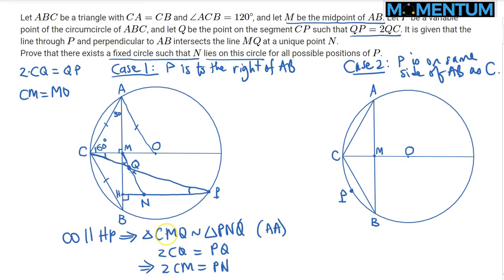But wait, 2CM is the same thing as CO. Therefore that would mean that CO is actually equal to PN. But CO is the circumradius of triangle ABC and it is fixed. This is just the circumradius of our triangle and it is fixed. So PN is fixed.